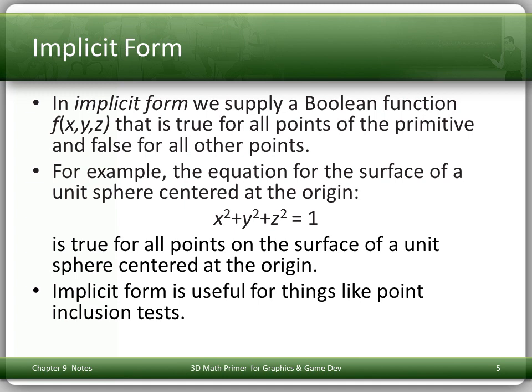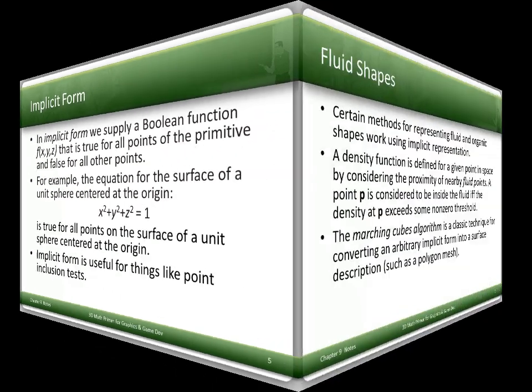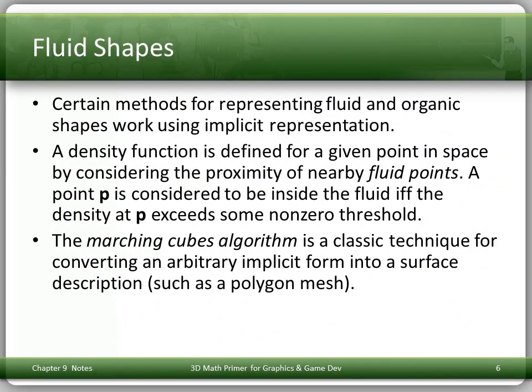For example, the equation for the surface of a unit sphere centered at the origin — x squared plus y squared plus z squared equals 1 — is true for all points on the surface of a unit sphere. Implicit form is useful for things like point inclusion tests. Certain methods for representing fluid and organic shapes work using implicit representation. A density function is defined for a given point in space by considering the proximity of nearby fluid points; point P is considered inside the fluid if the density at P exceeds some non-zero threshold. There's a specialized algorithm called the Marching Cubes algorithm, a classic technique for converting an arbitrary implicit form into a surface description such as a polygon mesh — if you're interested, Google that.